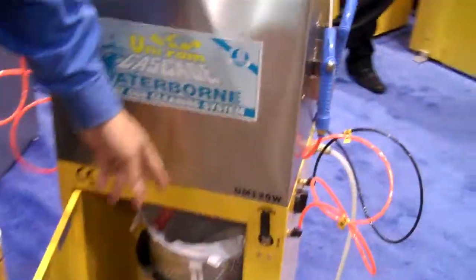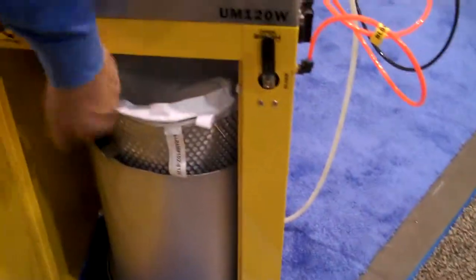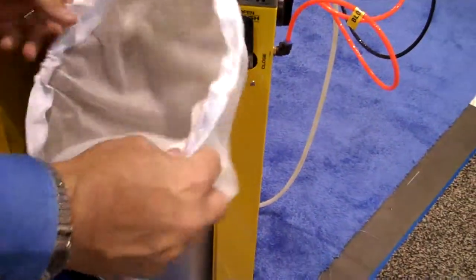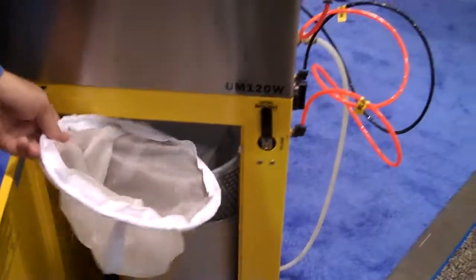We thereupon open up our drain valve and drain the clean water through our two filters. Our primary filter is a nylon mesh. Our secondary filter is a felt product.